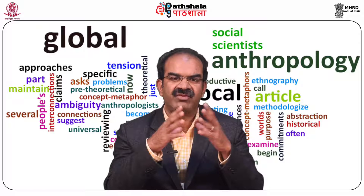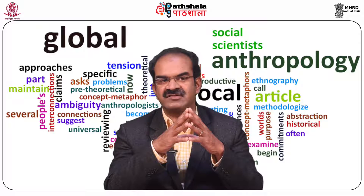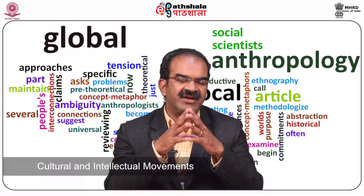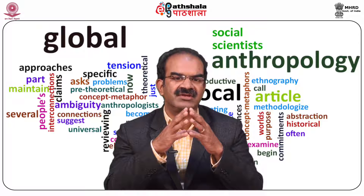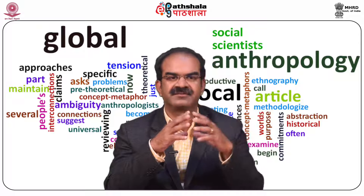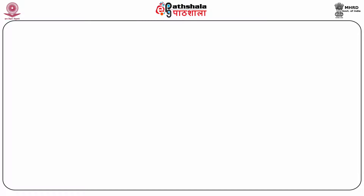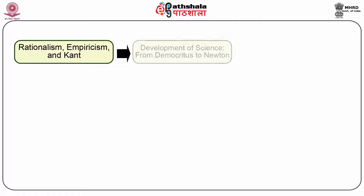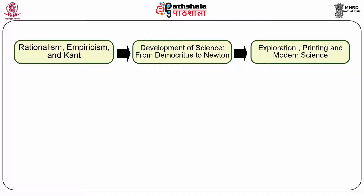Enlightenment also marked political aspects — there were series of revolutions that took place in France and even in the USA. And again, we have cultural and intellectual movements, where Enlightenment marked the advent of rationality, science, religion, and progress. With this, one can understand how these events came together. Rationalism gave further way to empiricism, which has profound thinking by Immanuel Kant. Then we have a series of scientific thinking from Democritus to Newton, exploration of new things, the invention of printing, and which led to modern science.